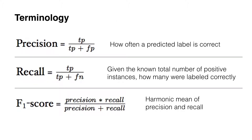Finally, some standard information retrieval and text mining metrics to introduce. Precision is simply how often a predicted label is correct. Recall is, given the total number of positive instances, how many have we labeled correctly. And F1 score is the harmonic mean of precision and recall.